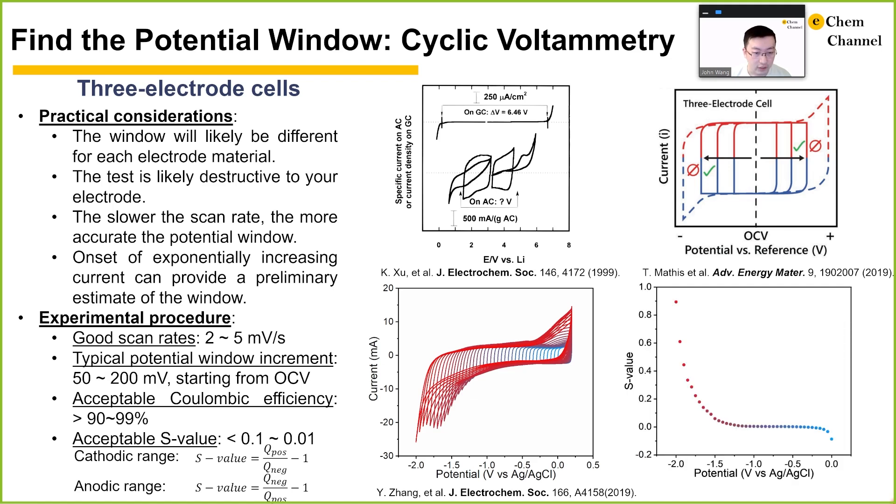The S-value for the voltammograms on the left is shown on the right. You can choose a cathodic limit potential of -1.5 V versus silver/silver chloride if you set the limit to 0.1 or -1.2 V versus silver/silver chloride if you set the limit to be 0.01.